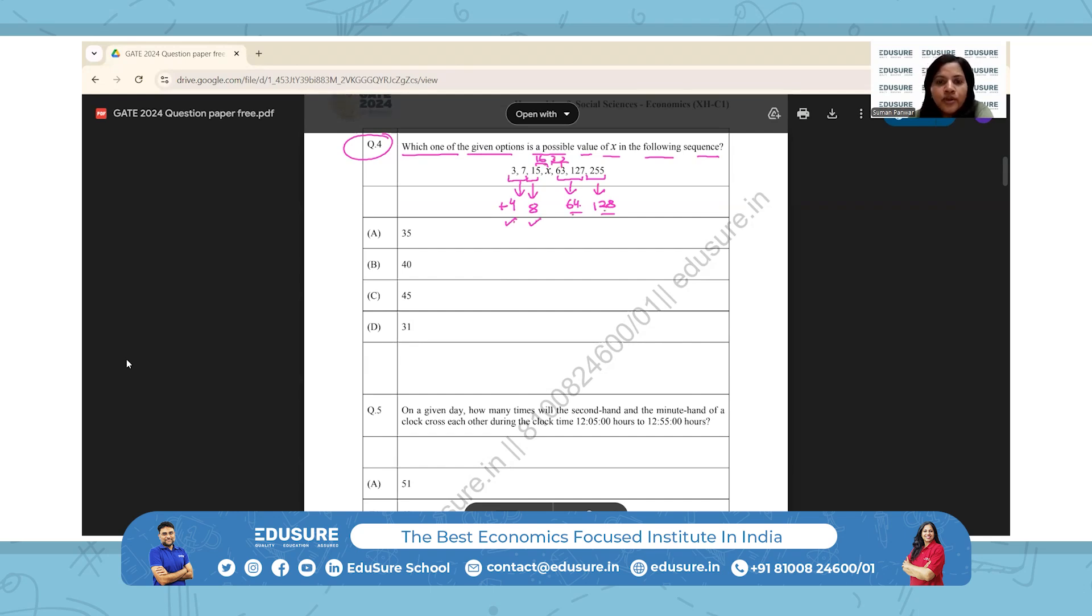Every time we are multiplying the difference by 2. So now from 15 to x, if we have a difference of 16, x must be equal to 15 plus 16, which is 31. And then from x to 63, there should be a difference of 32. So 31 plus 32 should be 63, which is correct. So the value for x should be 31.